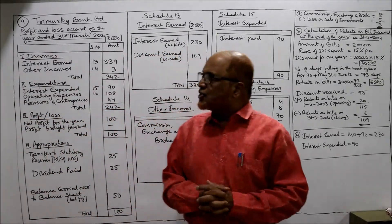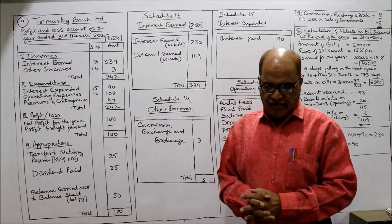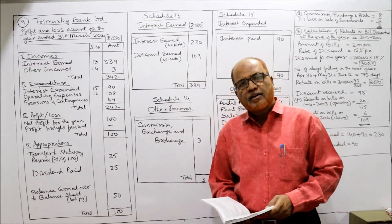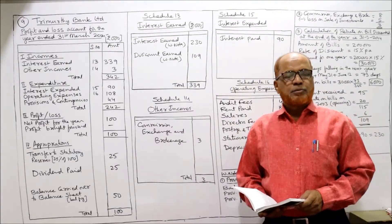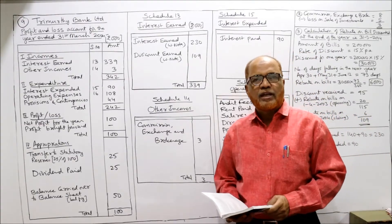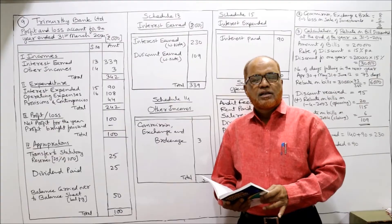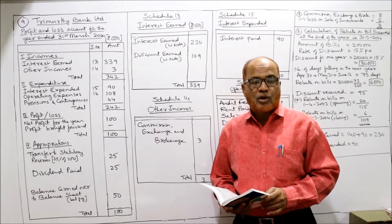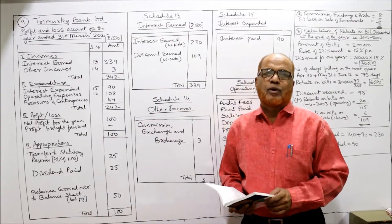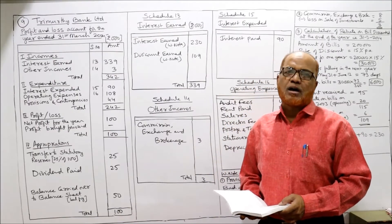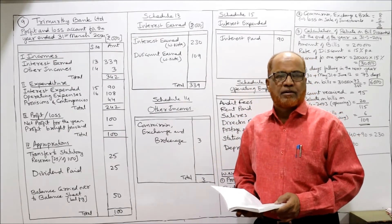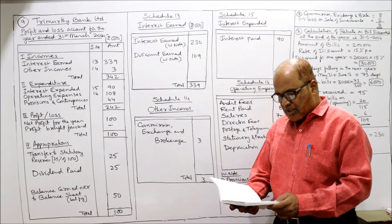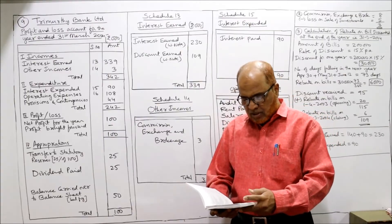Now we'll start the next problem, that is problem number nine. See carefully — almost 80 to 90 percent of the points are the same in every problem. Only two or three new points are there; those new points you have to highlight and focus on. The remaining points are exactly similar to what we have done in the previous problem. From the following figures relating to Three Moorthy Bank Limited, prepare the profit and loss account for the year ended 31st March 2004.